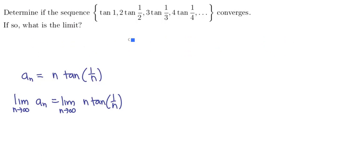So let's consider the function f of x that we get by replacing the n's by x's. So we have x times the tangent of 1 over x. And if we prep this for calculus, this is the function x times the tangent of x to the minus 1, which is now well defined.